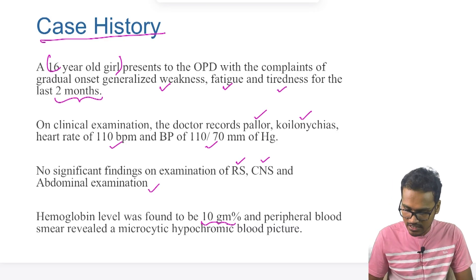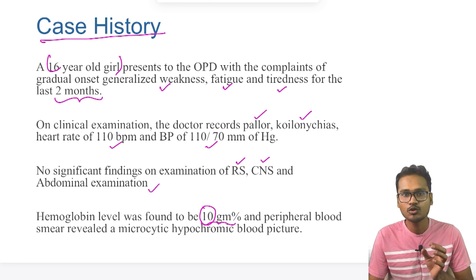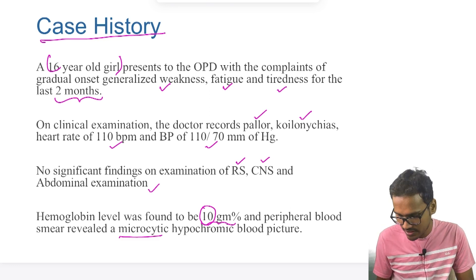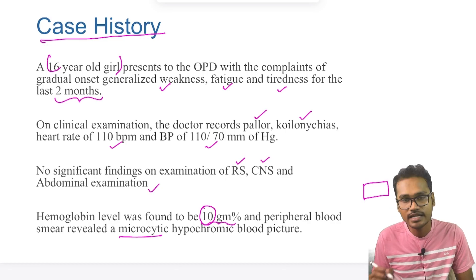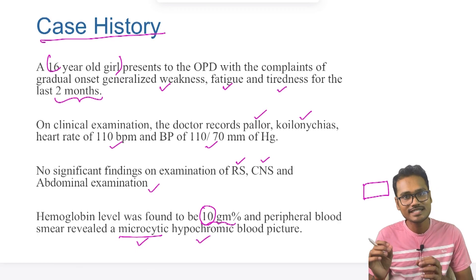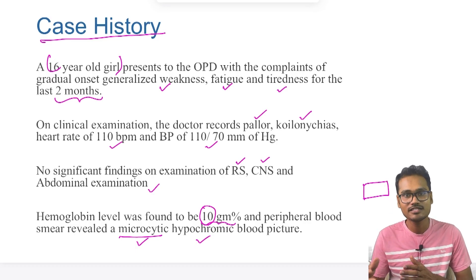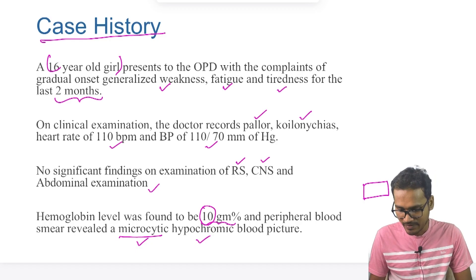The hemoglobin levels were found to be 10 g/dL, indicating that the hemoglobin levels are low. The peripheral blood smear revealed a microcytic hypochromic picture — the RBCs were looking microcytic and hypochromic. This is a classical feature of one type of diagnosis. You can pause the video and give your diagnosis in the comment section before looking at the answers.